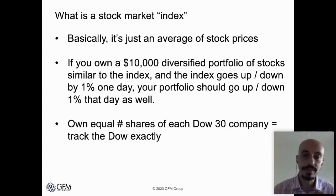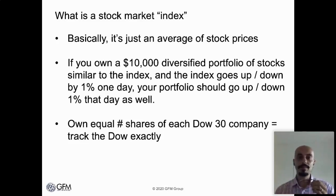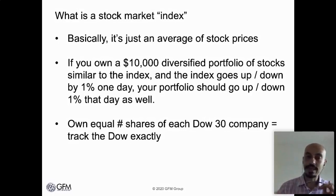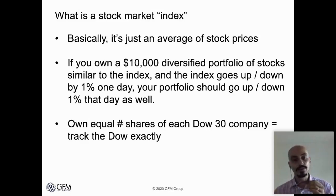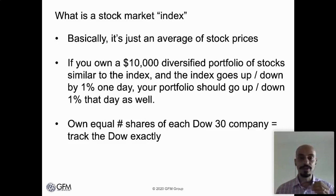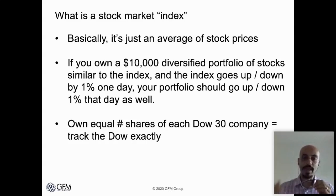One nice thing about the Dow is that if you own an equal number of shares of each of the 30 companies in the Dow Jones Industrial Average, that makes it the easiest index to track exactly. The S&P 500, by contrast, has 500 companies and is not measured by an equal number of shares, making it a little bit harder to track. But basically, if you own one share of each of these 30 companies, you will track the Dow Jones Industrial Average going up and going down.